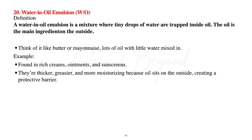Number twenty: water in oil emulsion. A water in oil emulsion is a mixture where tiny drops of water are trapped inside oil — the oil is the main ingredient on the outside. Think of it like butter or mayonnaise: lots of oil with a little water mixed in. Found in rich creams, ointments, and sunscreens. They're thicker, a little greasier, and more moisturizing because the oil sits on the outside creating a protective barrier.